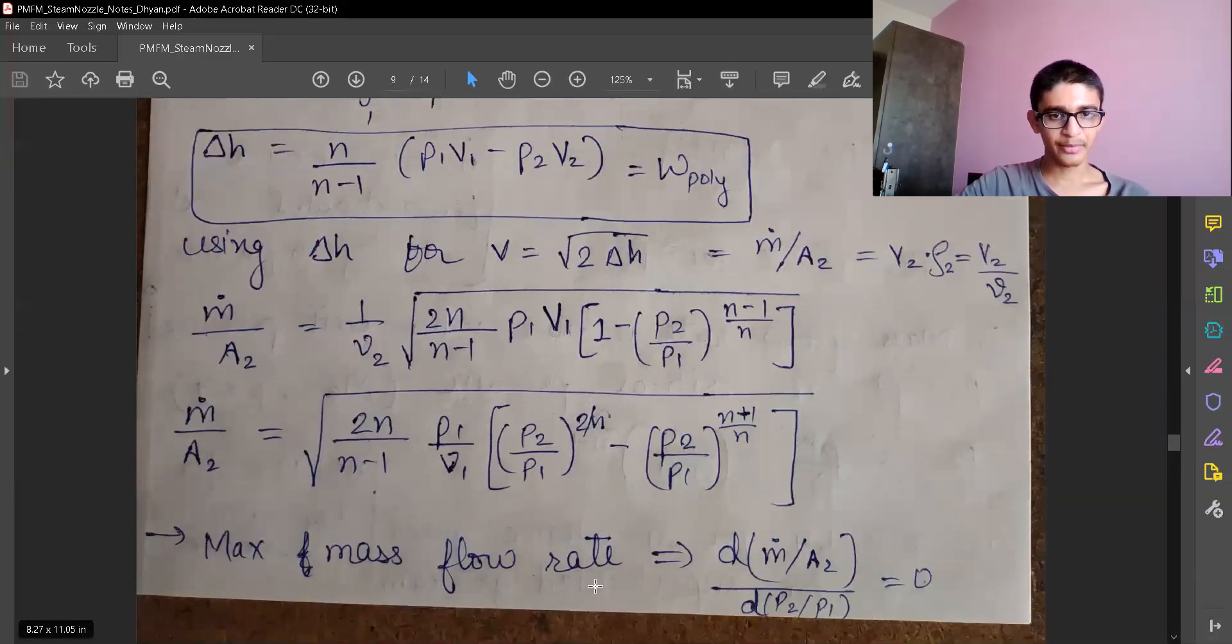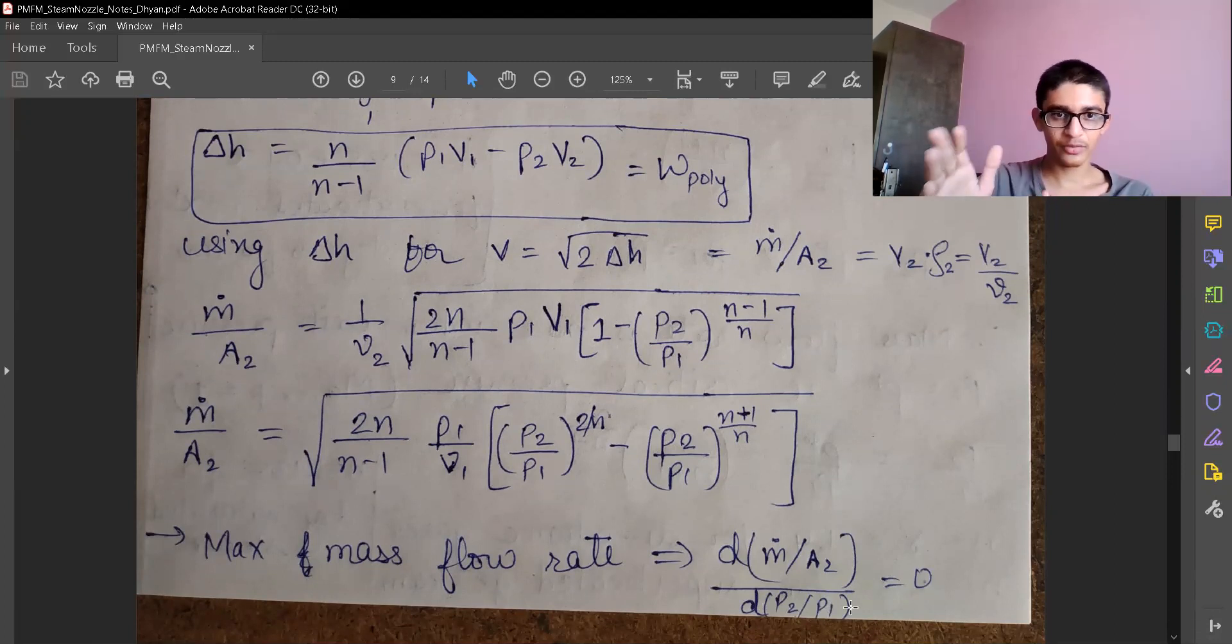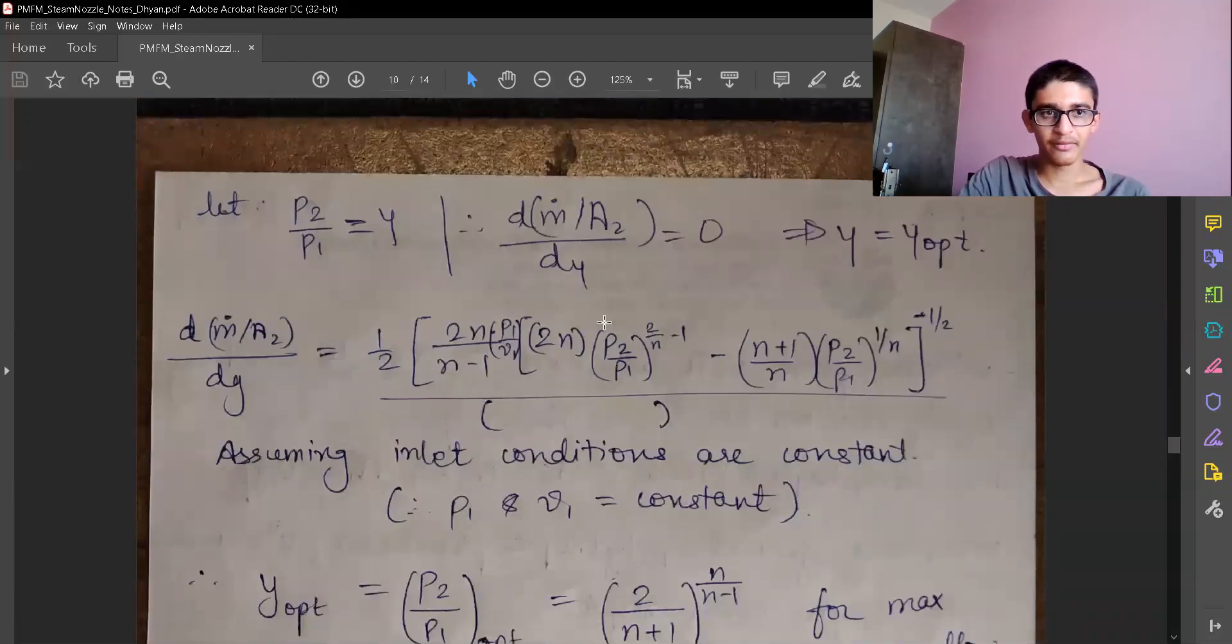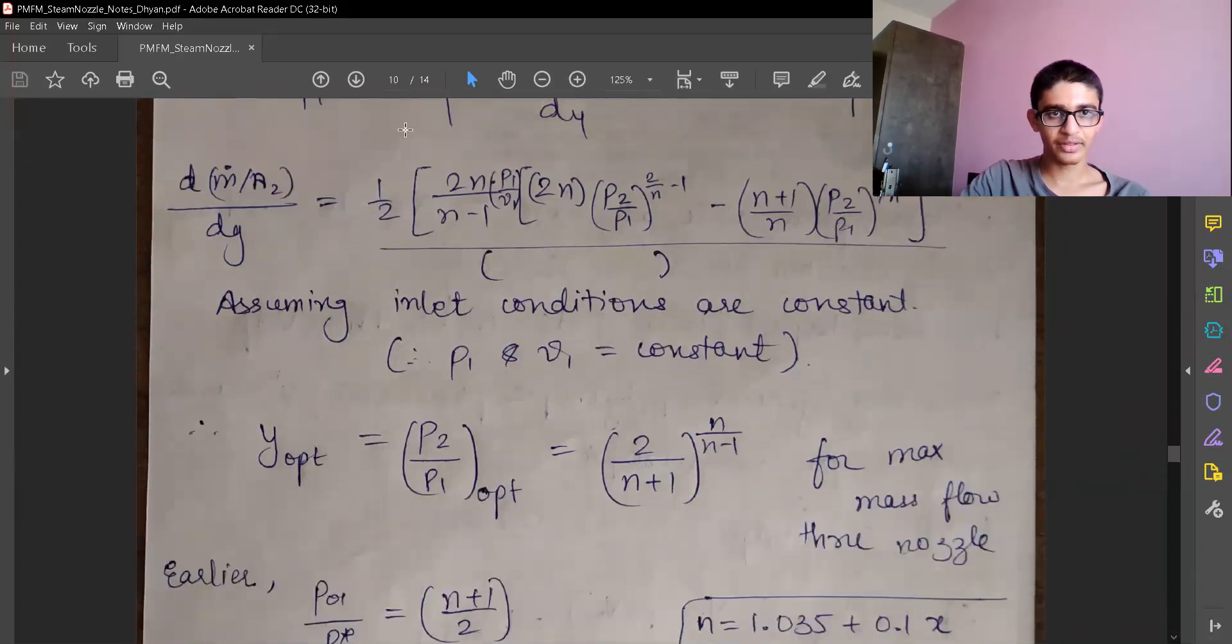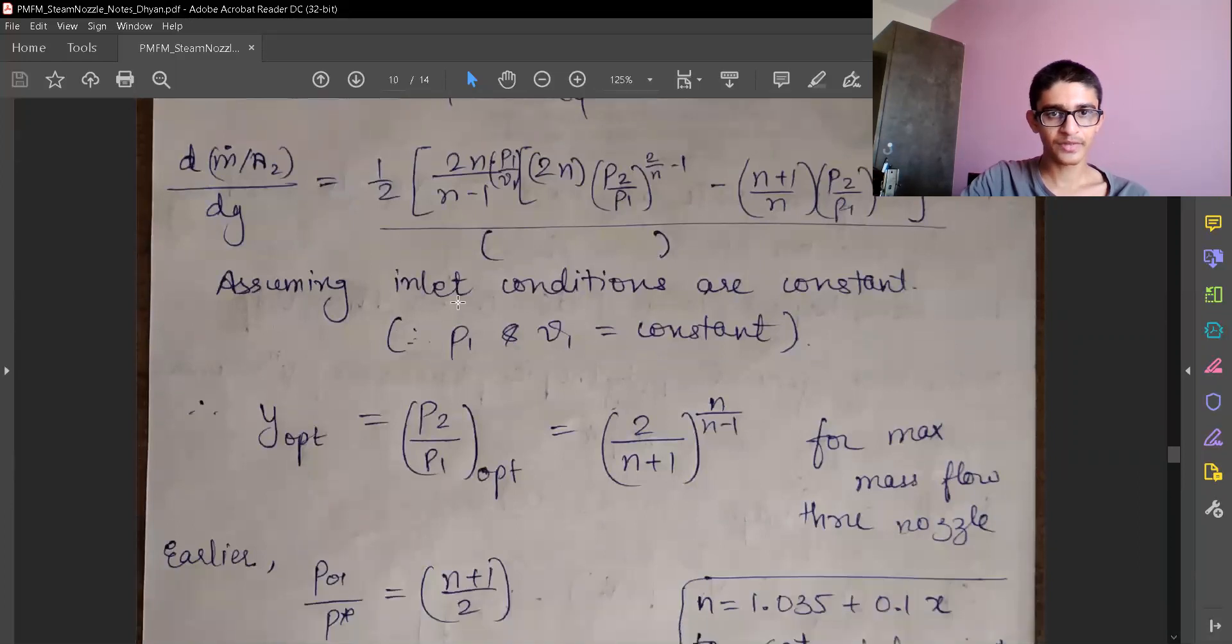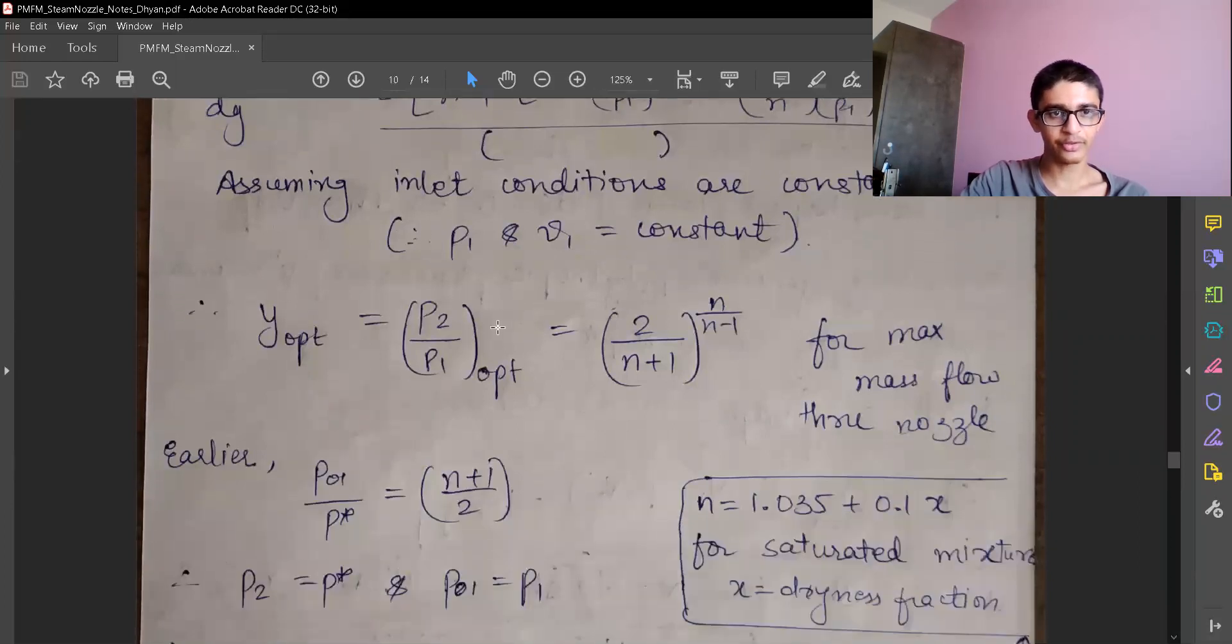So for maximum mass flow rate we can differentiate it with respect to P2 by P1 ratio—that is for a given P2 and P1, the given pressure ratio for the nozzle, inlet and outlet pressure. We have P2 by P1, the pressure ratio, is some optimum pressure ratio. We just need to put the numerator equal to zero, so we get optimum pressure ratio equals 2 by N plus 1 raised to N upon N minus 1, that is for maximum mass flow rate through nozzle.